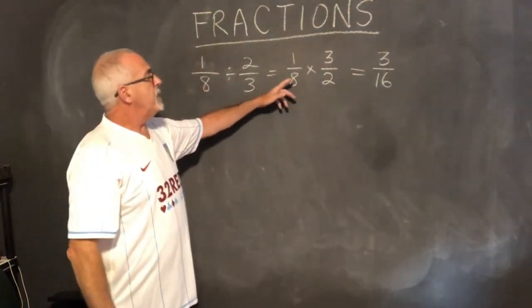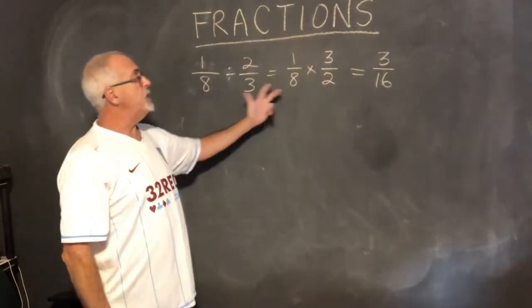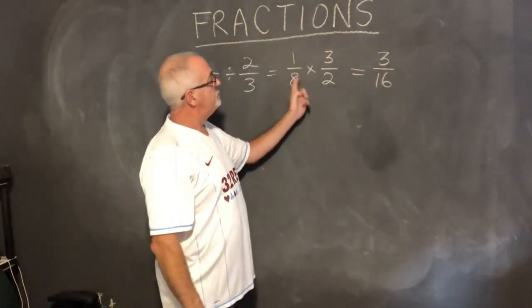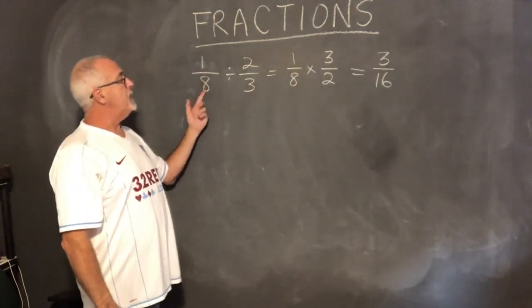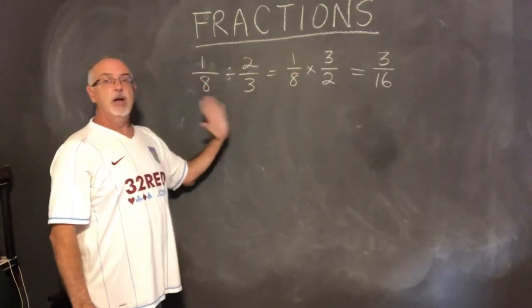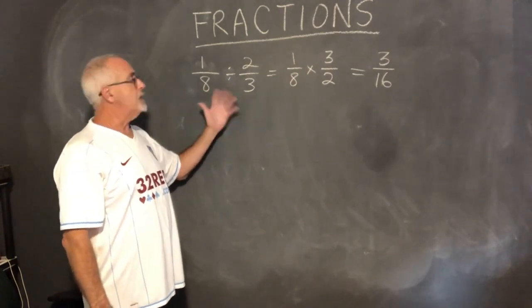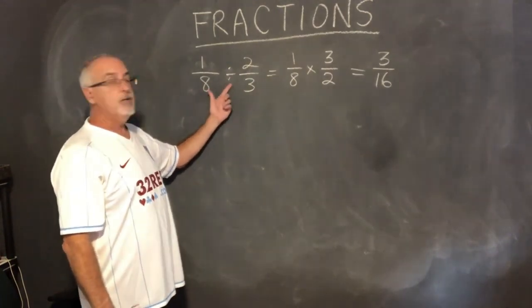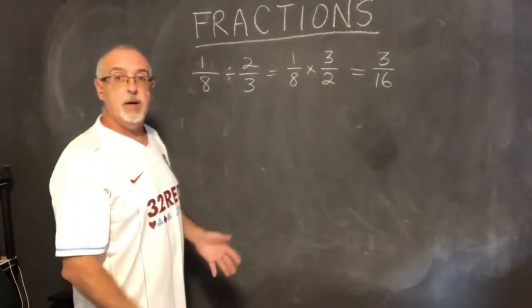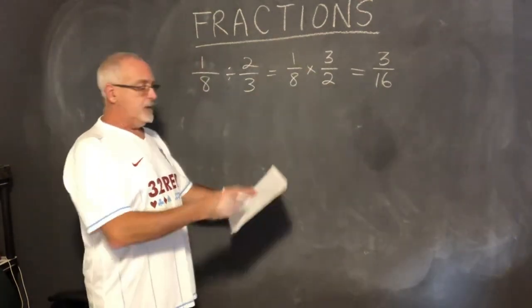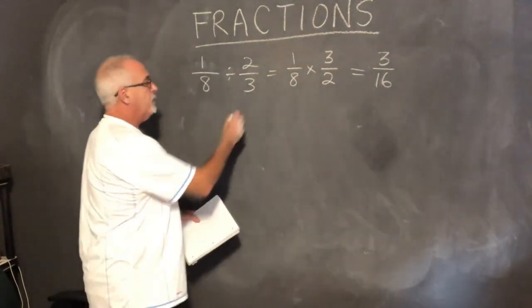Can we cancel with division? Not during the division step. If we tried to cancel the 8 and the 2 while it's still a division, that would be a mistake. You can only cancel in a multiplication. Once you've turned your division into a multiplication, then there might be a canceling opportunity.